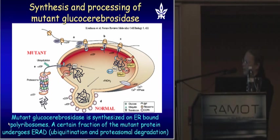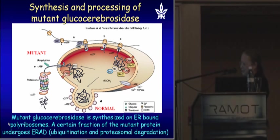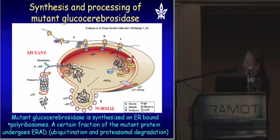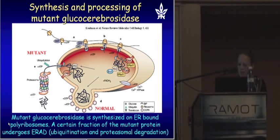As a misfolded protein, it is retrotranslocated to the cytoplasm where it gets ubiquitinated and degraded in the proteasome. So actually the normal enzyme and the mutant enzyme have different intracellular routes — the mutant enzyme is mostly degraded, and the normal enzyme finds its way to the lysosome. The question is: can we find a way to bring the mutant enzyme to the lysosome?